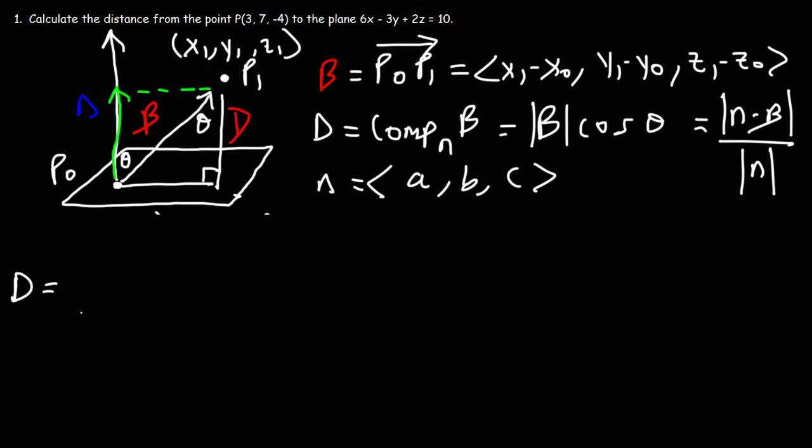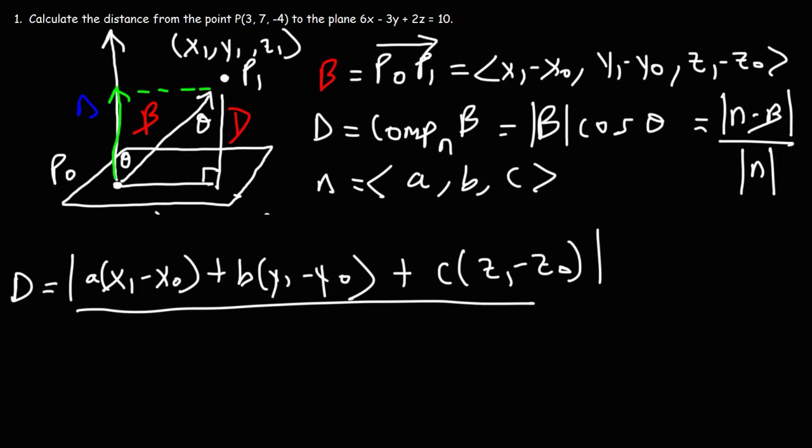So D is going to be the absolute value of the dot product of N and B. So this is going to be A times X1 minus X0, and then it's going to be B times Y1 minus Y0, and then plus C times Z1 minus Z0, divided by the magnitude of vector N, which is going to be the square root of A squared plus B squared plus C squared.